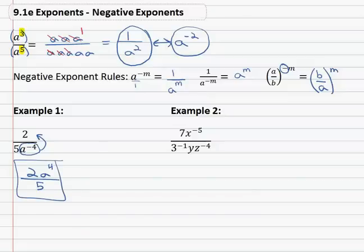Similarly, in example 2, we've got 7x to the negative 5th, 3 to the negative 1, yz to the negative 4. The negative exponents need to move.